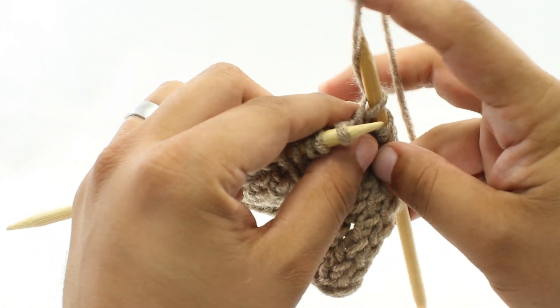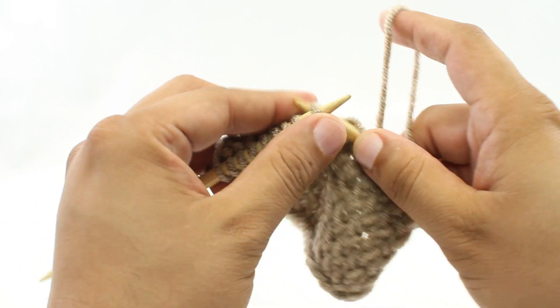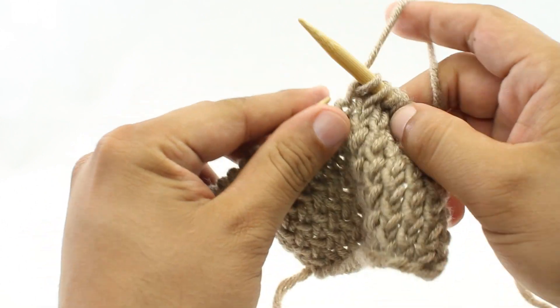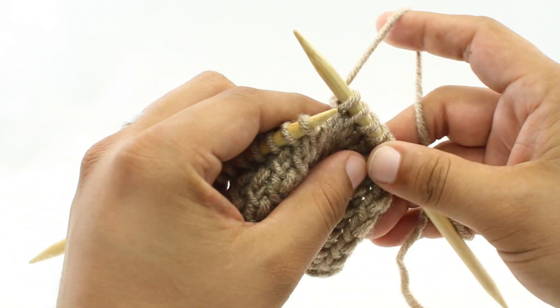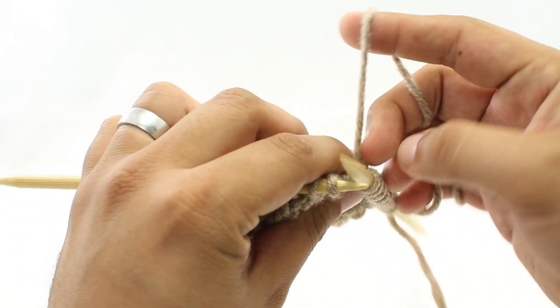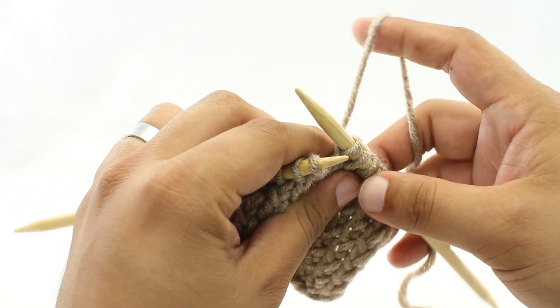So you would slip, you would have the yarn in back and then you continue working the pattern as normal. So all the pattern means when it says yarn in back is to keep the yarn behind the work.